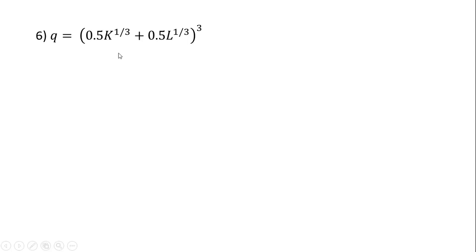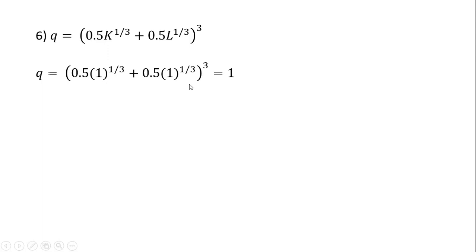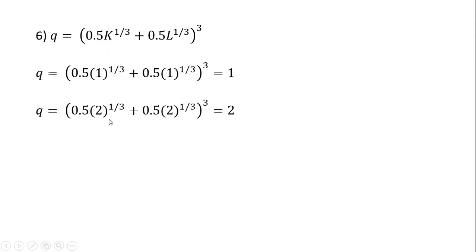Example 6 is a CES production function. Plugging in 1 for K and 1 for L, we see output is 1. Doubling our inputs, output exactly doubles — so here we have constant returns to scale.